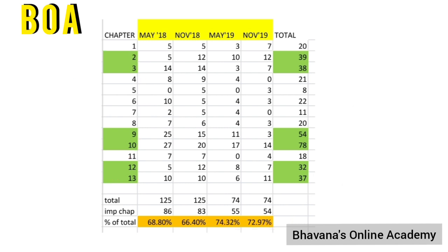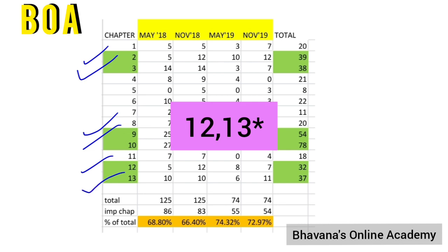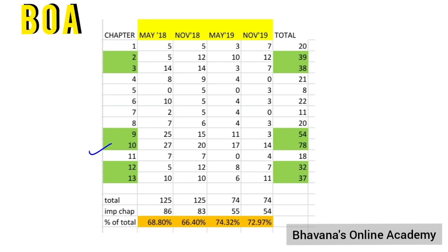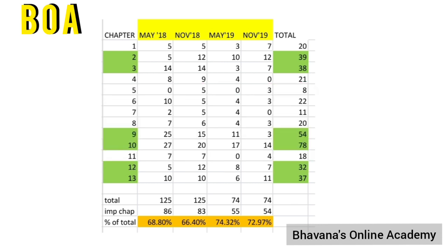So chapters 2, 3, 9, 10, 11, and 12 are very important — study these six chapters first, then move on to the others. Standards on Auditing are very important too. Chapter 10, Company Audit, can be quite tough and lengthy, so I have already uploaded Part 1 of Company Audit on YouTube — check it out. Part 2 is coming very soon. I'll also try to bring videos on Standards on Auditing if possible.